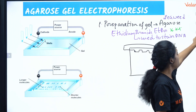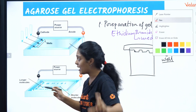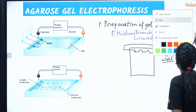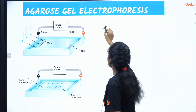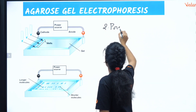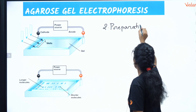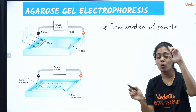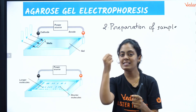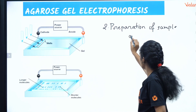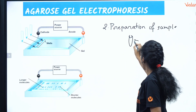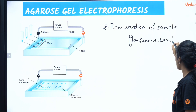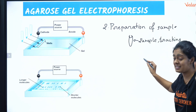Now let's move to the second step: preparation of samples. I take a small eppendorf tube — that is my sample container. I add my sample to it. Along with the sample, I also add a tracking dye.